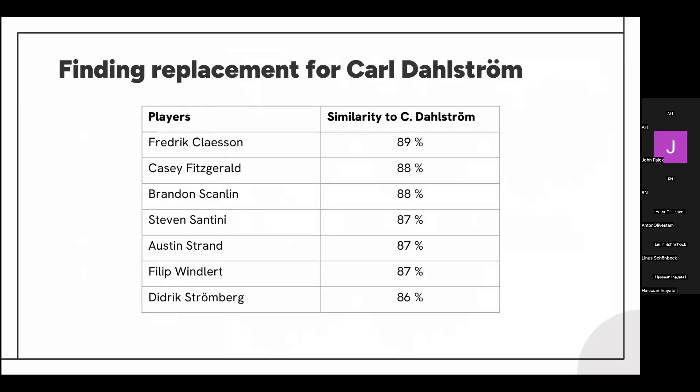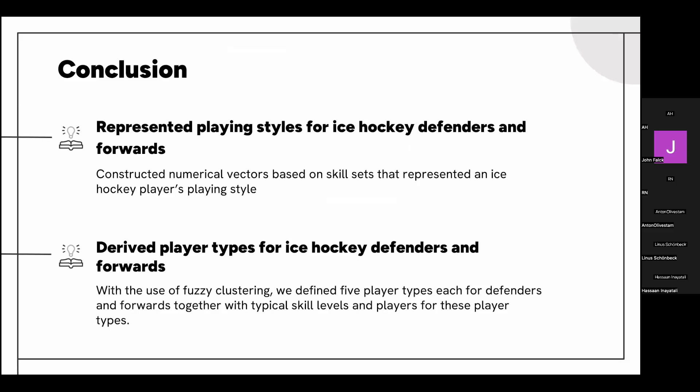Referring back to the challenge we discussed at the beginning — we can now apply our model to quickly retrieve a list of players with the most similar playing style to Karl Dahlström and start the scouting process from there. To conclude, our objective was to identify player types in hockey. Our approach involved constructing vectors consisting of key skills that characterize each player, and using these vectors we identified five distinct player types for both forwards and defenders.